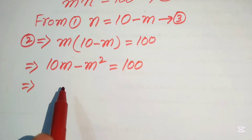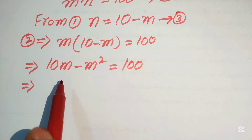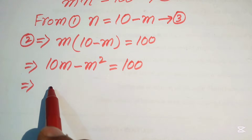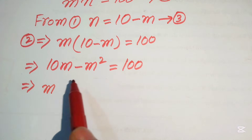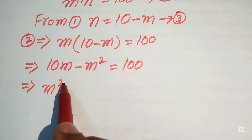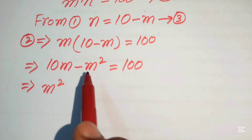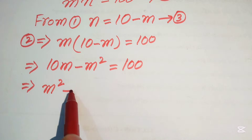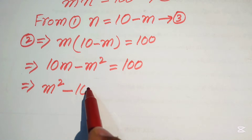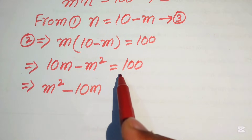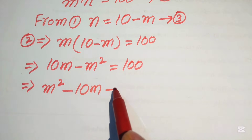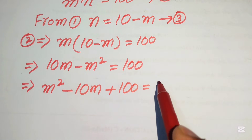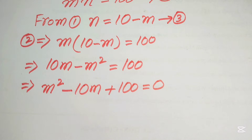We write this into standard form by moving the terms to the right-hand side. When we move minus m squared it becomes plus m squared, positive 10m becomes minus 10m, giving us m squared minus 10m plus 100 equals zero.